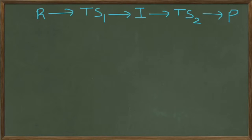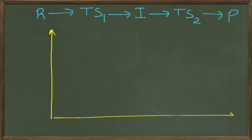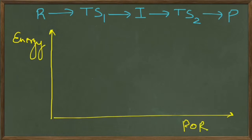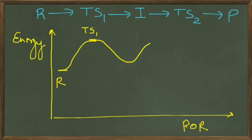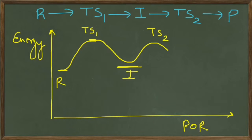To draw the energy diagram for this set of processes, you start with the reactant. On the y-axis we take energy, on the x-axis we take progress of reaction. You start with the reactant and make a hill — at the top of this hill you have the first transition state. Then it comes down and forms another hill. Every transition state is at the top of a hill, and you see a valley-like structure — this is where an intermediate lies. Intermediates are always in the valleys, transition states at the hilltops, and then transition state 2 gets converted to product.